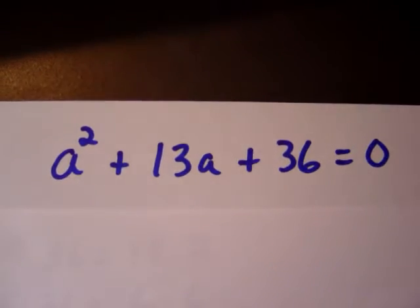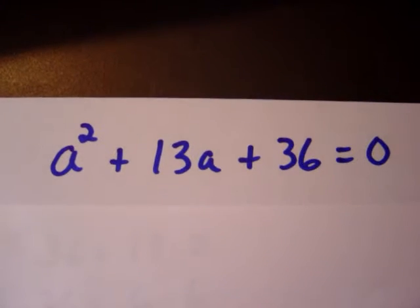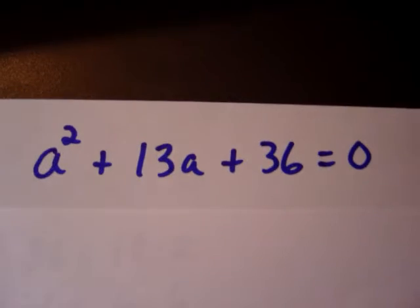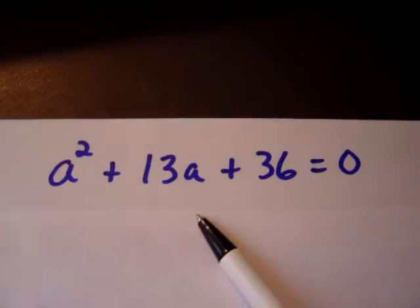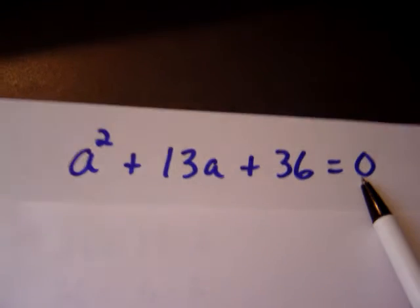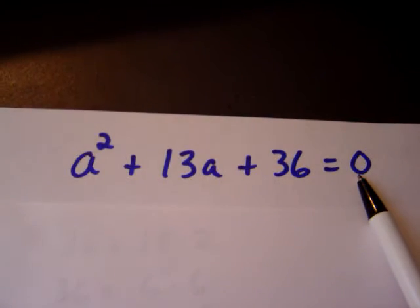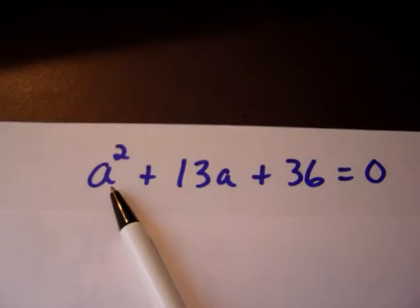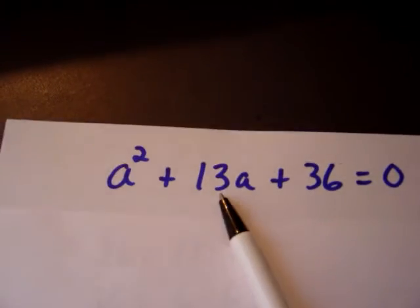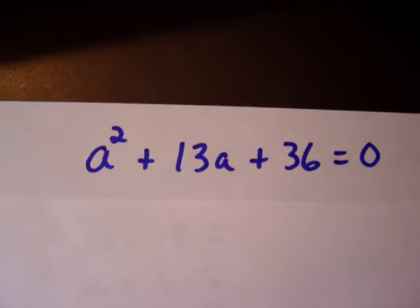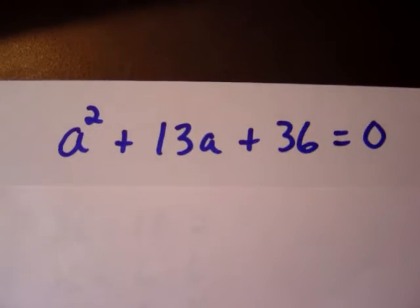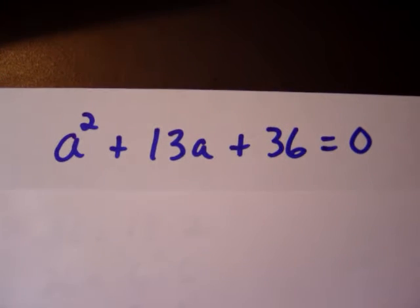Here's an equation: a squared plus 13a plus 36 equals 0. Anytime you see an equation, you're thinking about how the left side must equal the right side, so these three terms must add up to equal zero. We're thinking about what number we can replace into here and add those up, plus the 36, and get 0. I have no idea — this is definitely not something you want to use guess and check on. There must be a more precise, simple method.